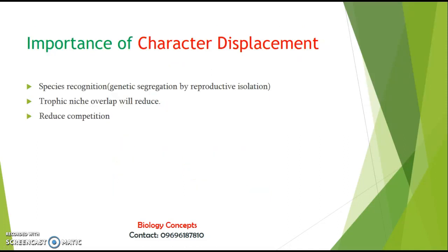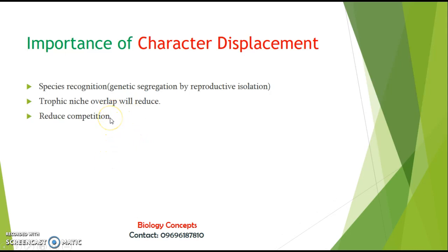The last topic of discussion is the importance of character displacement. First, it is very helpful in species recognition — which type of species is present, meaning genetic segregation. If something is genetically segregated, they are reproductively isolated, and some reproductive barriers will be present. Second, trophic niche overlap will reduce — if there is character displacement, niche overlap will definitely reduce, and ultimately it will reduce competition as well, because character displacement is a result of competition. If there is no competition, there will be no character displacement.